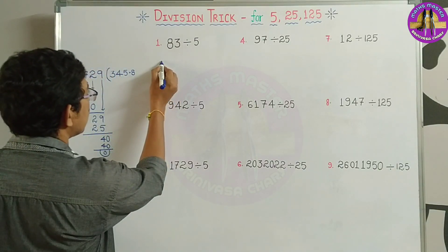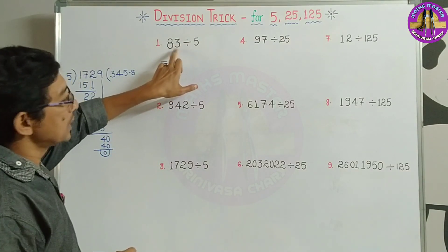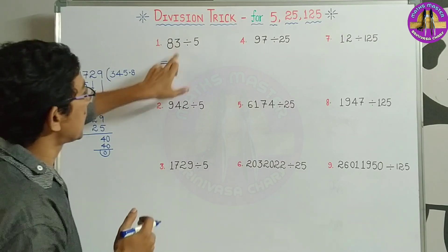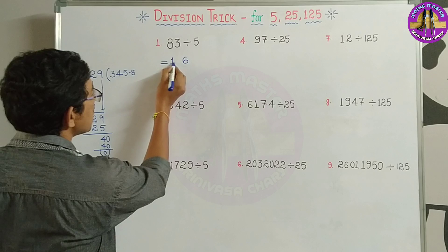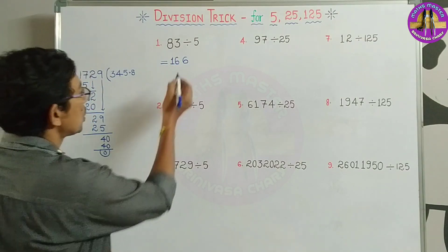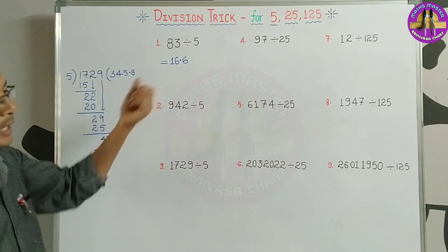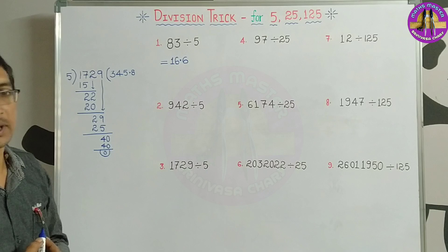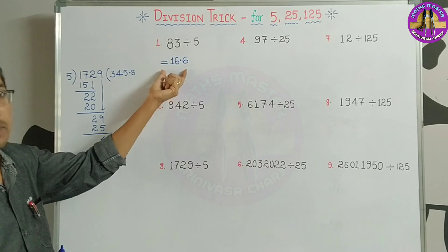Here, 83 divided by 5. What we will do is simple. Here, 2 digits: double the digits. 5 of 8 is doubled: 16. M is 3 doubled: 6. So 166. M is equal to 16 point 6. So the value of 83 divided by 5 is 16.6. We can calculate easily.